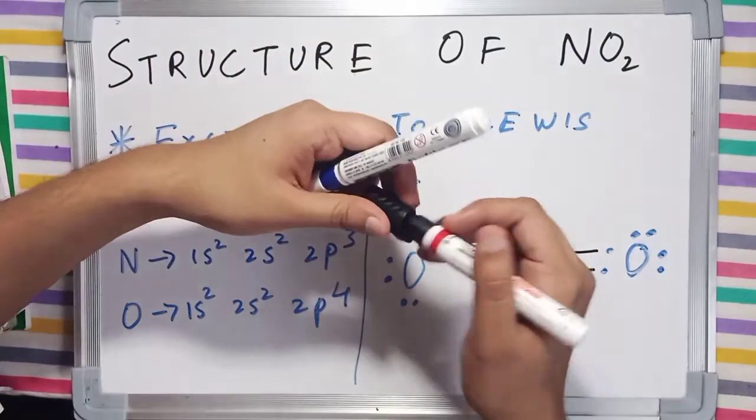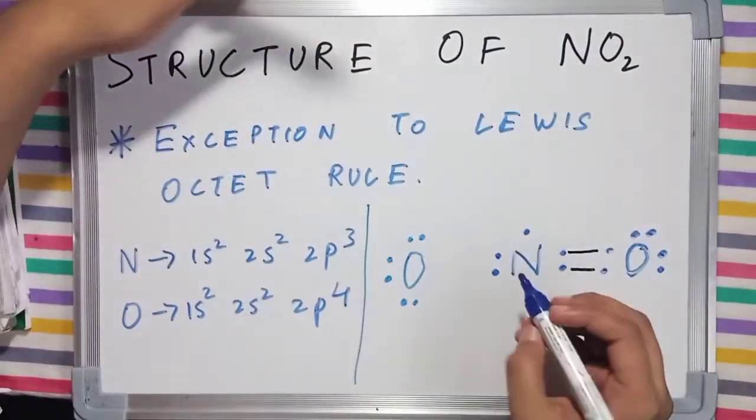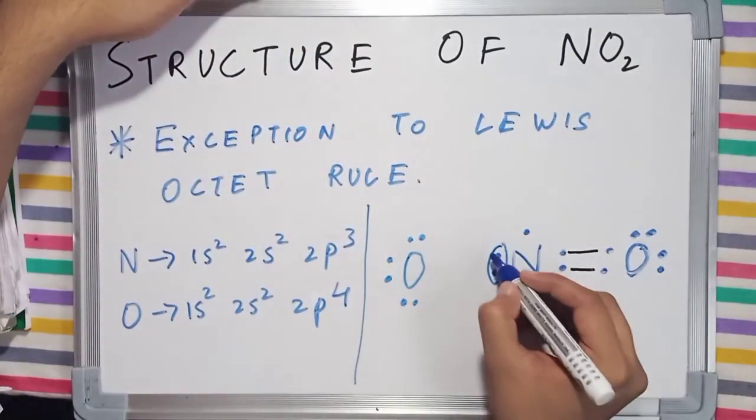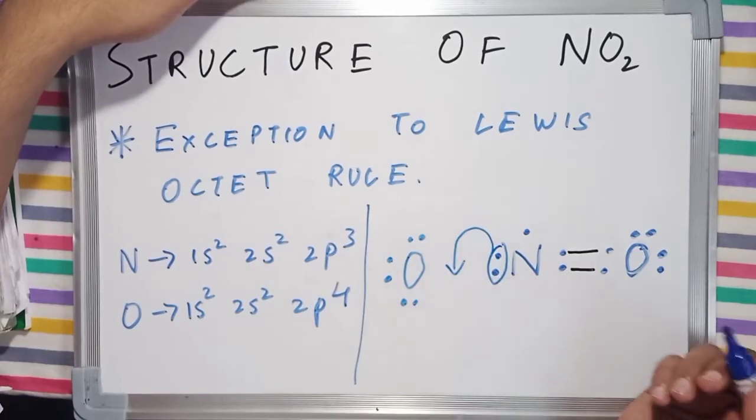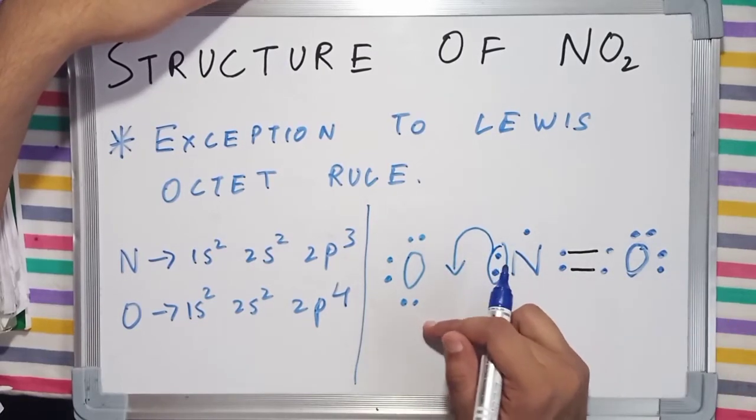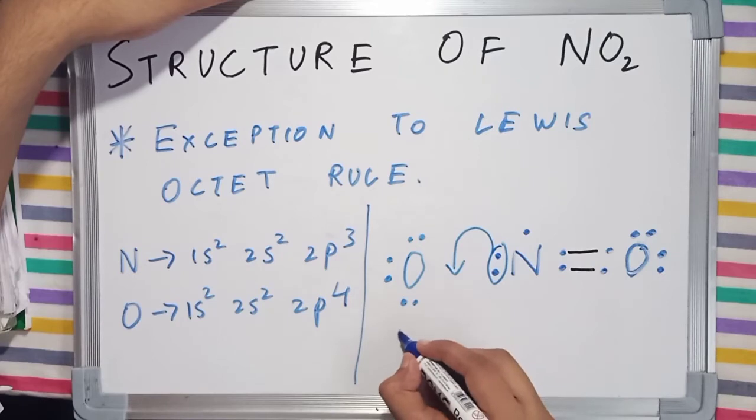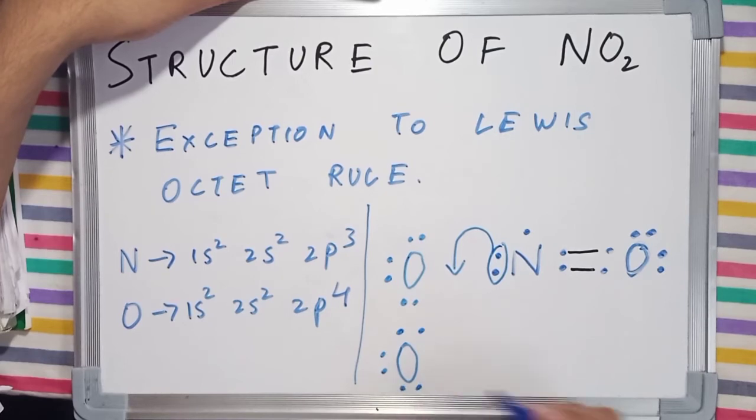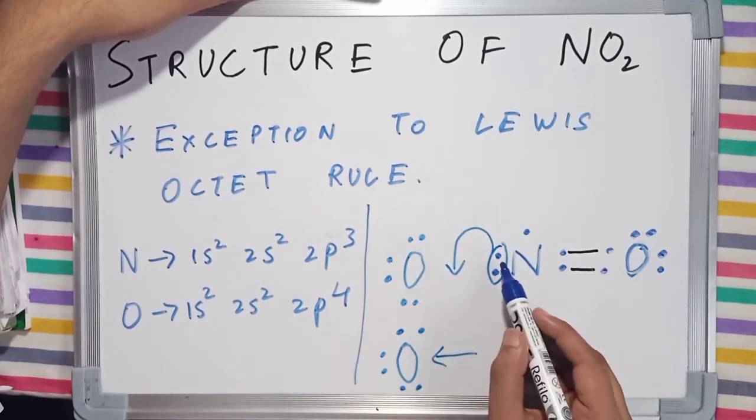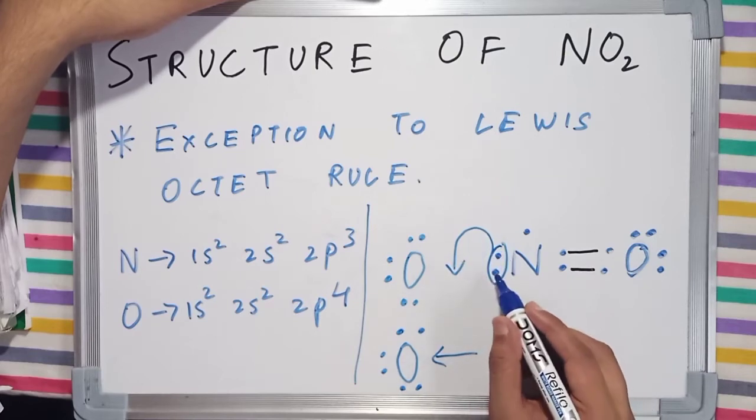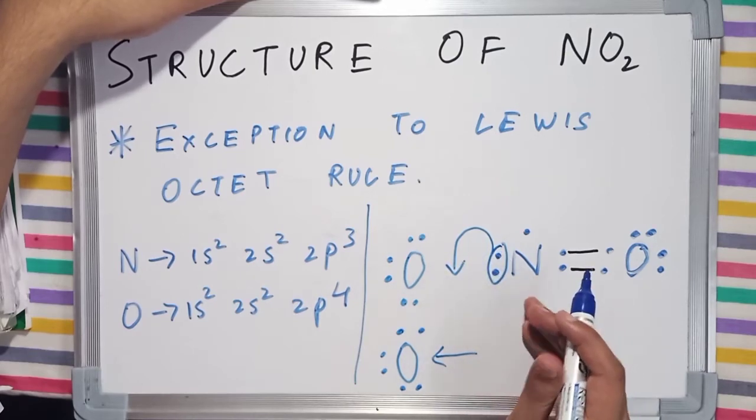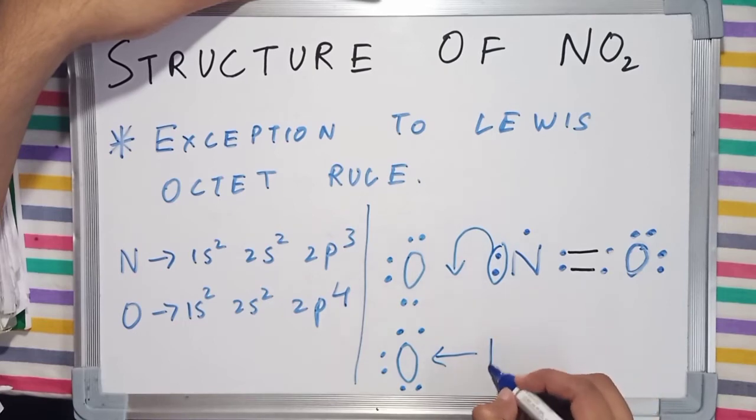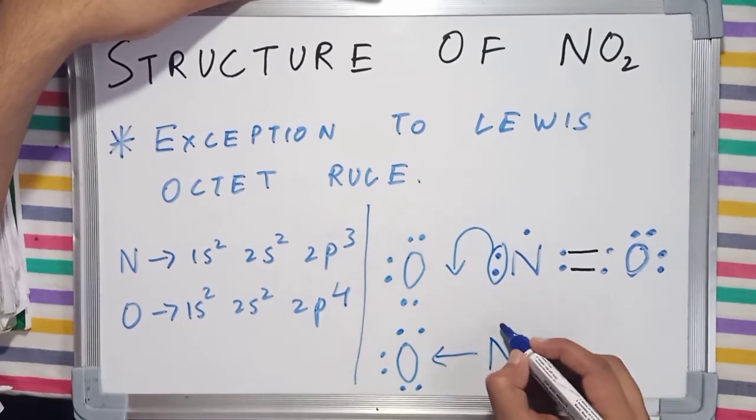Instead, what happens is that nitrogen simply donates 2 of its electrons to the other oxygen. Oxygen was having 6 valence electrons. Here comes the coordinate bond. This was the coordinate bond: donating of 2 electrons from just a single atom to another atom, which is also known as unequal sharing.